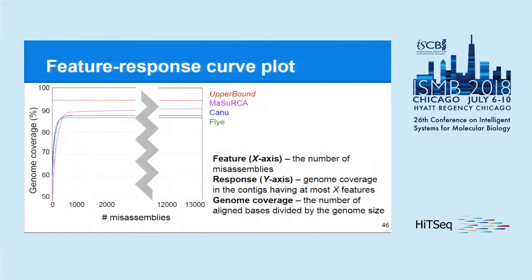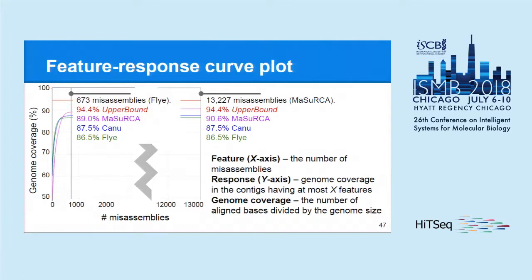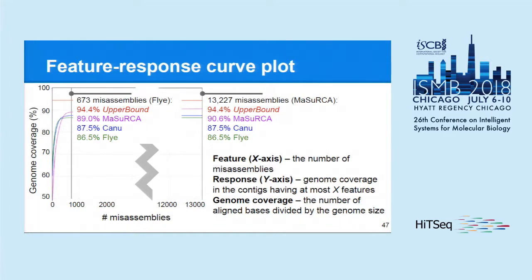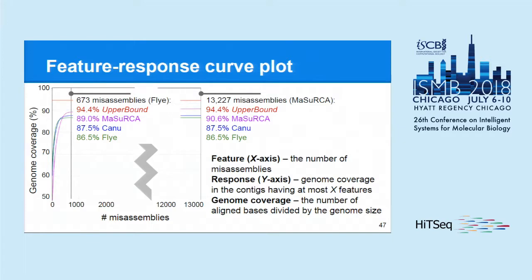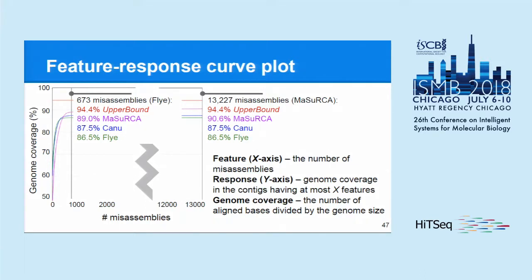To show this, I introduce the feature response curve plot, where the feature is the number of misassemblies. The Y-axis shows genome coverage of all contigs or scaffolds containing at most X misassemblies. If you look at two points on this plot — one related to the smallest number of misassemblies among the three competitors (the fly number) and another related to Masurca's 13,000 misassemblies — you may see that almost all 13,000 misassemblies are located in contigs summing up to less than two percent of genome coverage. So most of the largest contigs contain just a few misassemblies, comparable to fly and Canoe. Masurca is better if you simply discard all short contigs.